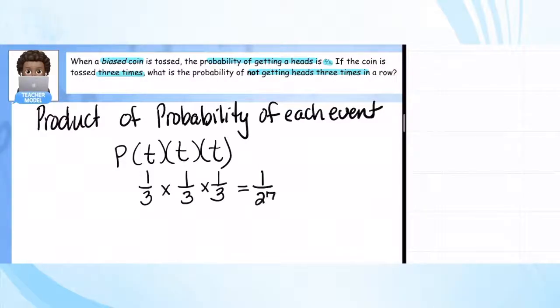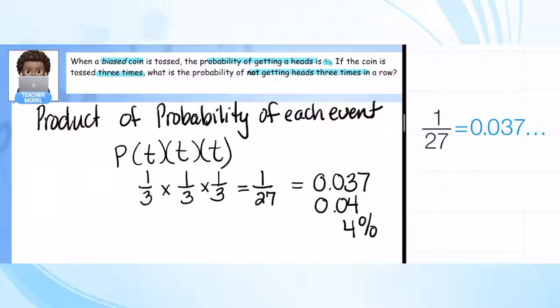Which is 1 out of 27 - very little chance. Let's turn that into a decimal, and that is equal to 0.037. Let's round it to 0.04 or 4% - very unlikely.